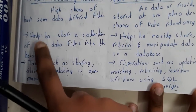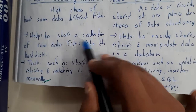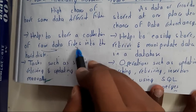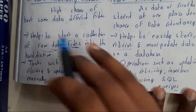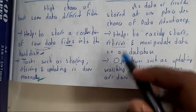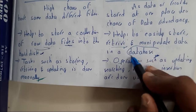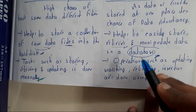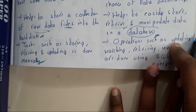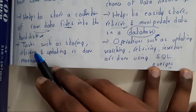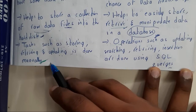File system helps to store a collection of raw data files into the hard disk — it is just a collection of raw data. Whereas in database management system, we store and retrieve data from the database, which is an organized way of arranging the data.